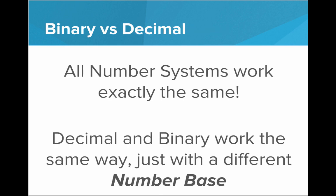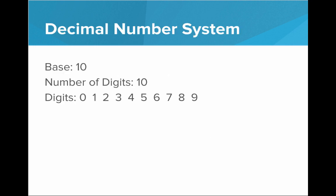But first we need to recognize that all number systems work exactly the same. Decimal and binary, in the way that they represent numbers, work the exact same way — they just have a different number base. To see what I mean by number base, let's look at the decimal number system. The decimal number system has a base of 10, which means we have 10 digits to work with: 0 through 9.